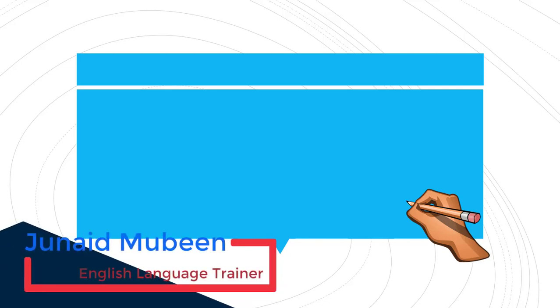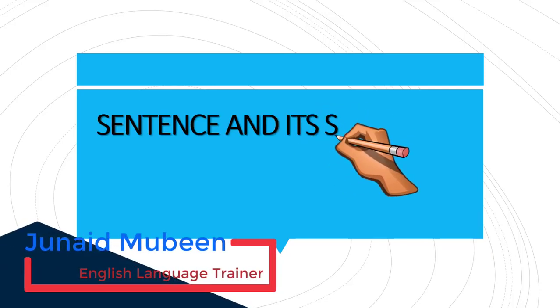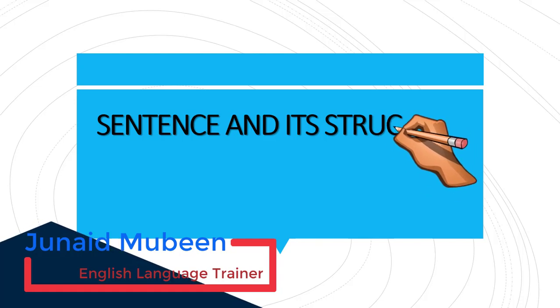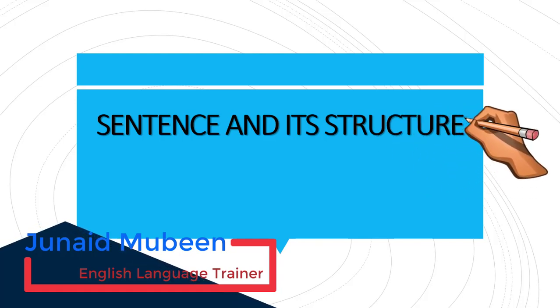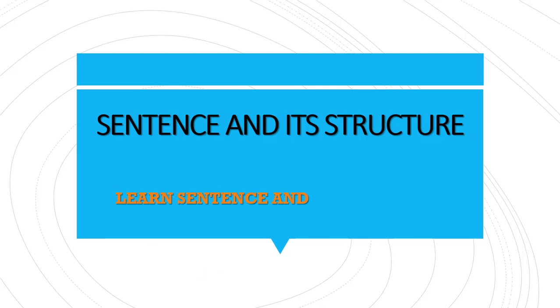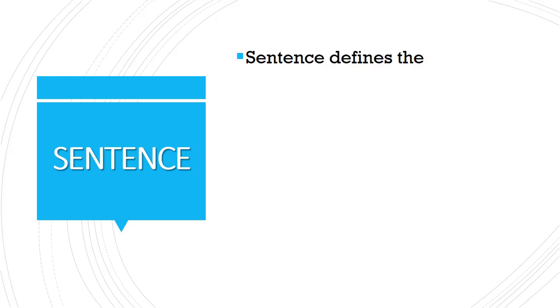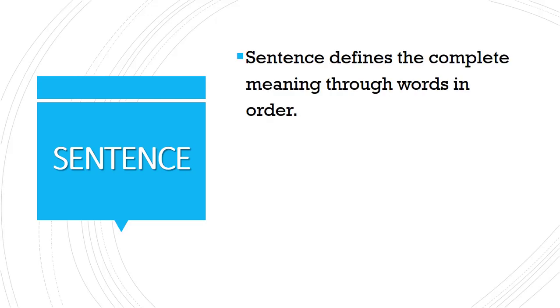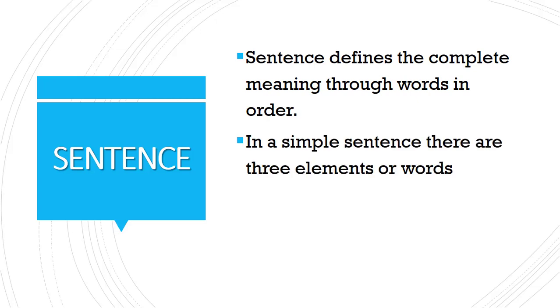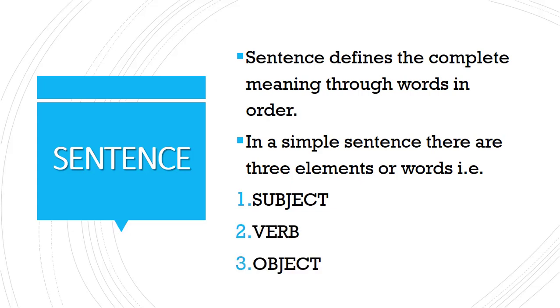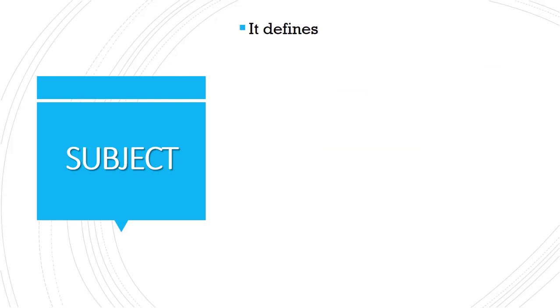Assalamu alaikum guys, this is Junaid Mubeen. Today we are going to study about the sentence and its structure. A sentence defines the complete meaning through words in order. In a simple sentence there are three elements: subject, verb, and object.